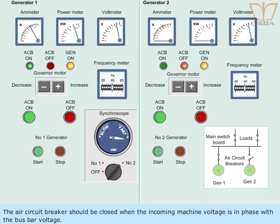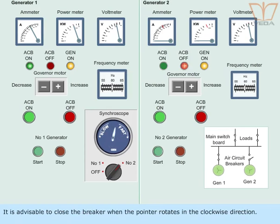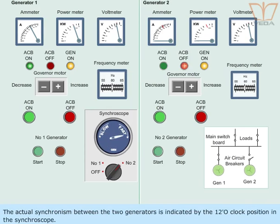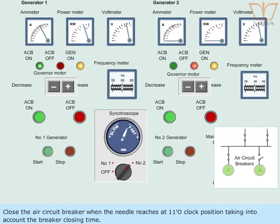The air circuit breaker should be closed when the incoming machine voltage is in phase with the bus bar voltage. It is advisable to close the breaker when the pointer rotates in clockwise direction. The actual synchronism between the two generators is indicated by the 12 o'clock position in the synchroscope. Close the air circuit breaker when the needle reaches at 11 o'clock position, taking into account the breaker closing time.